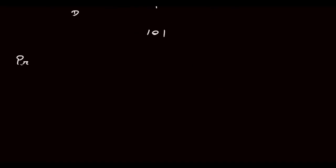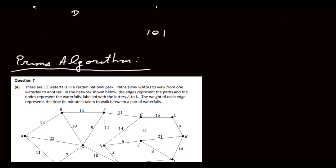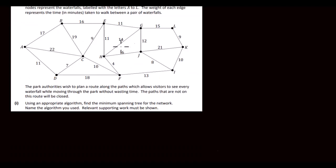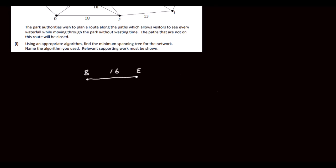Let's have a look at Prim's algorithm. I've copied the question down again so I can see the network. With Prim's algorithm, you start at any node — let's start at B. We draw the edge with the least weight from B. In this case that's BE, which is 16. You then draw the edge with the least weight from those two nodes. We have 17, 19, 9, 11, and 11 — so 9 is the lowest. We draw EC, weight 9.